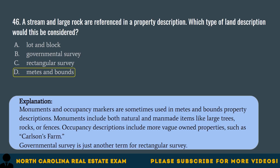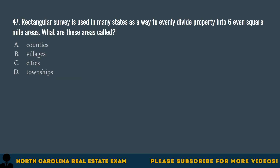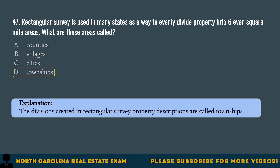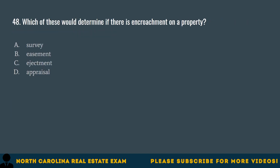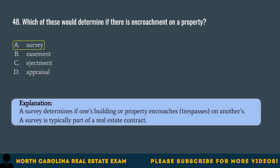Question 47. Rectangular survey is used in many states as a way to evenly divide property into six even square mile areas. What are these areas called? The correct answer is D. Townships. Question 48. A survey determines if one's building or property encroaches or trespasses on another's. A survey is typically part of a real estate contract.